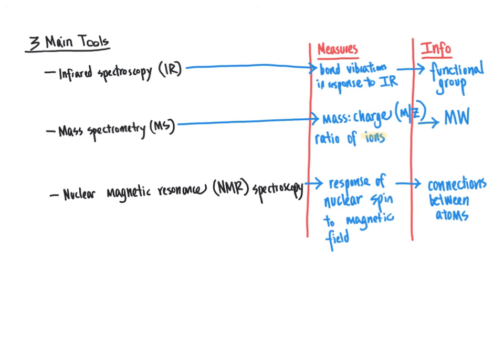In the next several videos, we are going to focus on IR, MS, and NMR one at a time, focusing on how to interpret these types of data. We are not going to get into a lot of depth about the instrumentation used for each of these — that is a topic covered in modern analytical chemistry and other upper-level coursework. Instead, we'll focus on practical applications: when you are given or collect yourself an IR spectrum, a mass spectrum, or an NMR spectrum, how do you use that to determine the structure of an organic molecule? In the next video we'll focus on IR, and in later videos, MS and NMR.